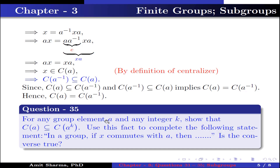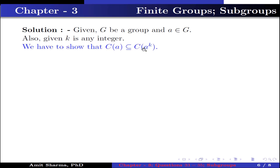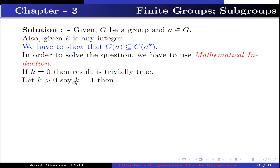Question number 35: For any group element A and any integer k, show that C(A) ⊆ C(Aᵏ). Use this fact to complete the following statement: In a group, if x commutes with A, then — and state whether the converse is true. We use mathematical induction. If k = 0, the result is trivially true. For k = 1, C(A) ⊆ C(A), since every set is a subset of itself.